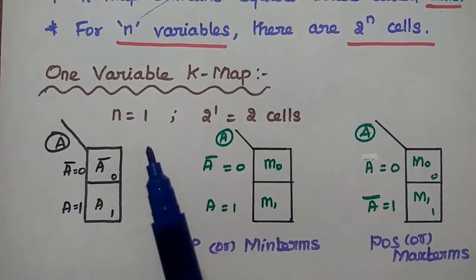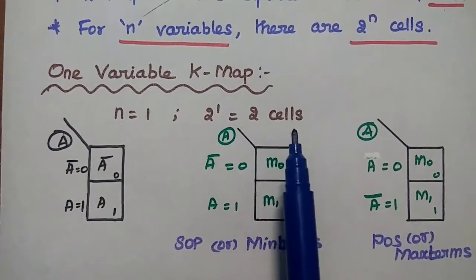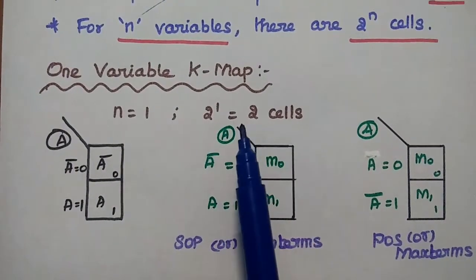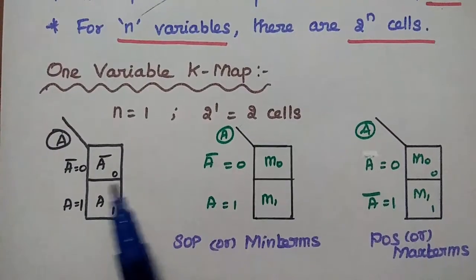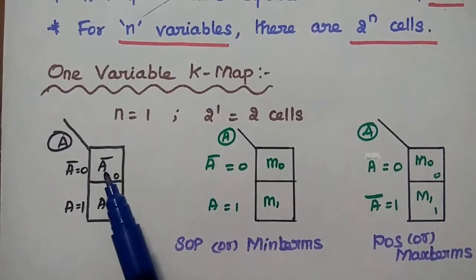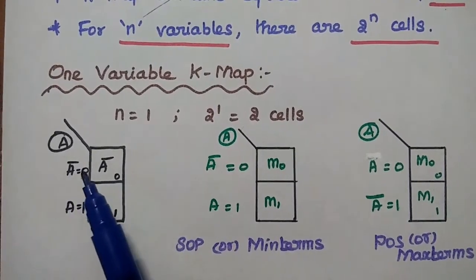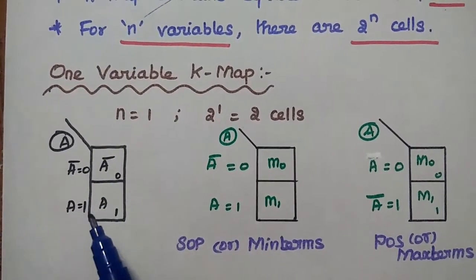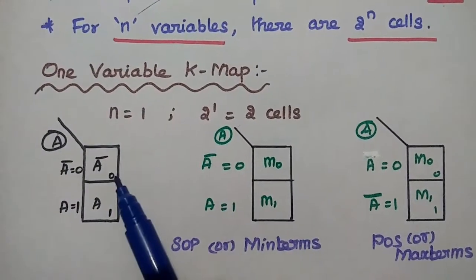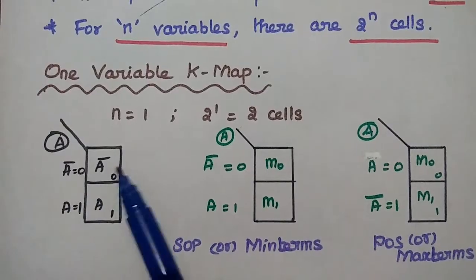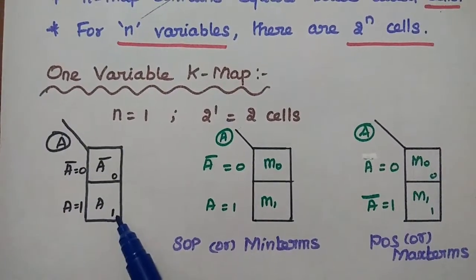For one variable, that is n equal to 1, there are only 2 cells — 2 to the power 1 equals 2 cells. It can be represented like this. Here, A-bar equals 0 (that means complement), and A equals 1. The same can be represented with 0 and 1 denoting the values of the cells.